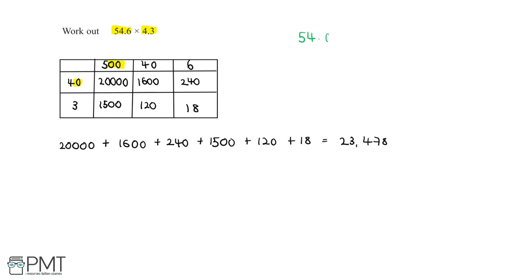We started off with 54.6. To get to 546, we multiplied this by 10. And for 4.3, to get to 43, we multiplied by 10. But this isn't actually the question, because the question was 54.6 times 4.3. So we multiplied both numbers by 10, which means we multiplied a total of 10 times 10, which is 100. So our answer for 546 multiplied by 43 is actually 100 times larger than 54.6 times 4.3.